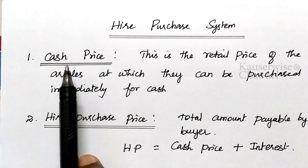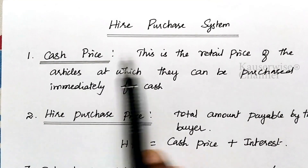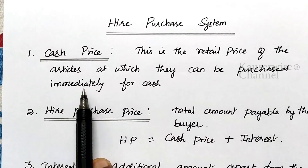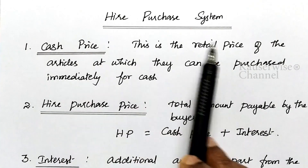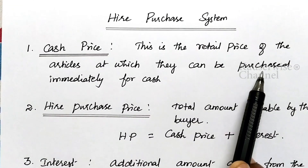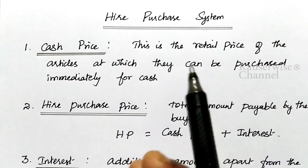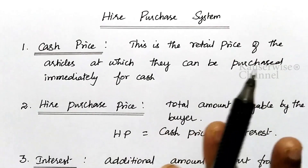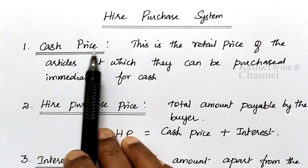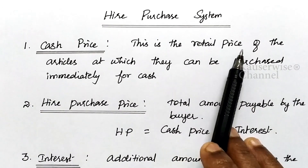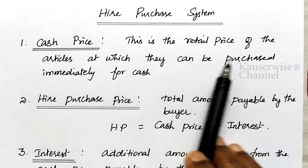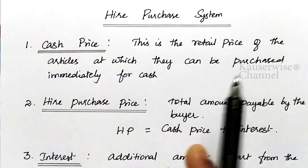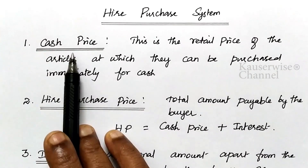The first important term is cash price. Cash price is the retail price of the article or goods, which can be purchased immediately for cash. When you acquire any item from the seller in a normal retail shopping, that price is called cash price — the actual retail price of the product, not under hire purchase, immediately for cash.